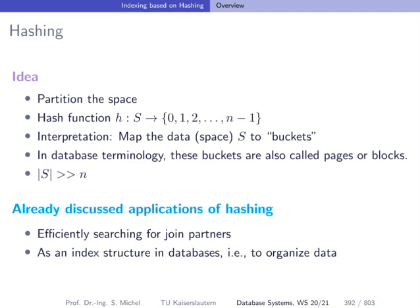In general, the idea of hashing is the following. We want to partition the space into so-called buckets, and we do this by the use of a hash function. We call it usually h, and h maps the space of data, e.g. keys like integer keys, to n buckets. The idea here is that the number of buckets n is much smaller than the space of possible keys that are used as the input to the hash function.